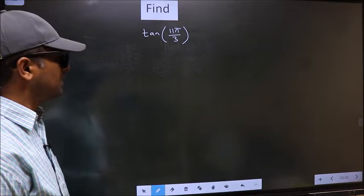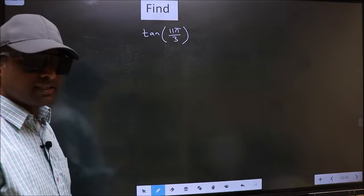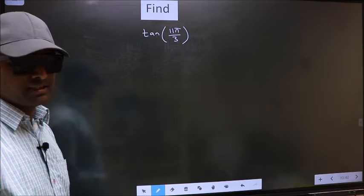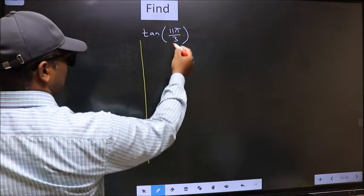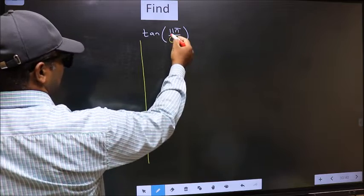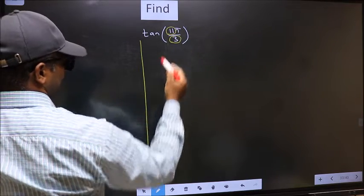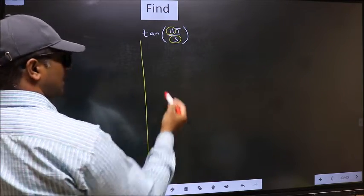To find tan 11π by 3, we should follow this method. In the denominator we have 3, in the numerator 11. Now you should check, 11 is close to which multiple of 3?